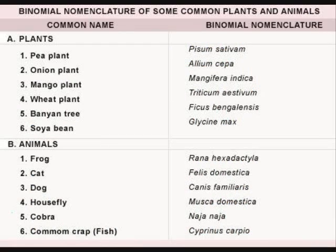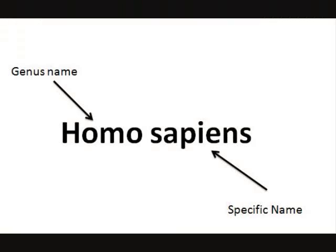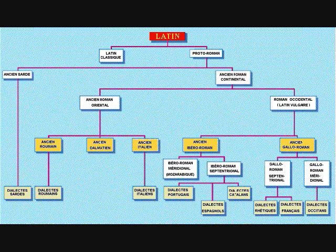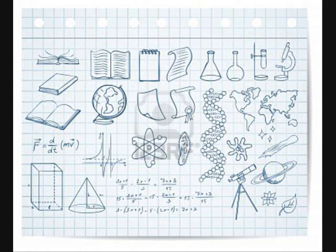Linnaeus' method of naming organisms, called binomial nomenclature, set his system apart from Aristotle's system and remains valid today. Binomial nomenclature gives each species a scientific name that has two parts. The first part is the genus name and the second part is the specific epithet or specific name that identifies the species. Latin is the basis for binomial nomenclature because Latin is an unchanging language and historically it has been the language of science and education.